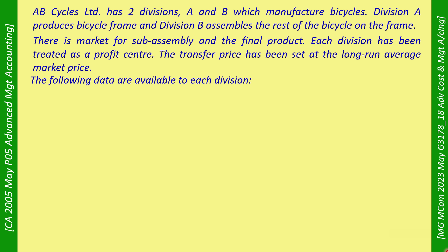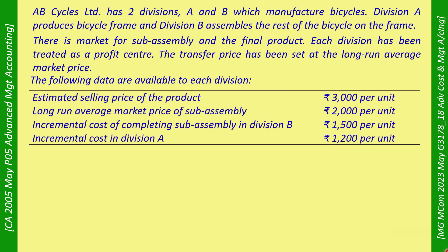The following data are available to each division: estimated selling price of the product is Rs. 3,000 per unit; long-term average market price of subassembly is Rs. 2,000 per unit; incremental cost of completing subassembly in Division B is Rs. 1,500 per unit; and incremental cost in Division A is Rs. 1,200 per unit.